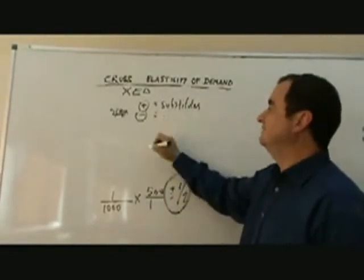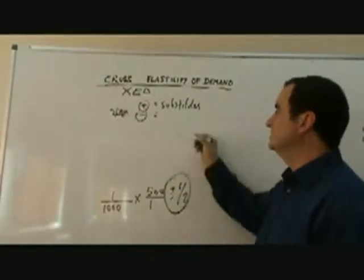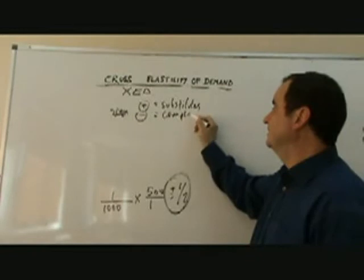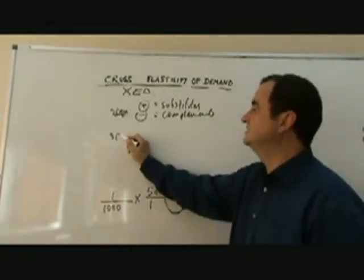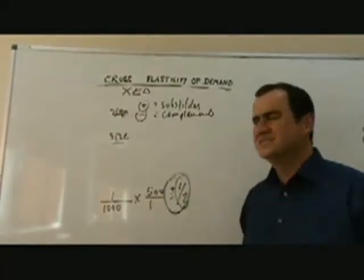If it came out of negative, we'd have to conclude that the two goods being studied are complements. Now, the number, that's the size. In this case, it's a half. Size, you know, with other elasticities, bigger or smaller than one is really important.